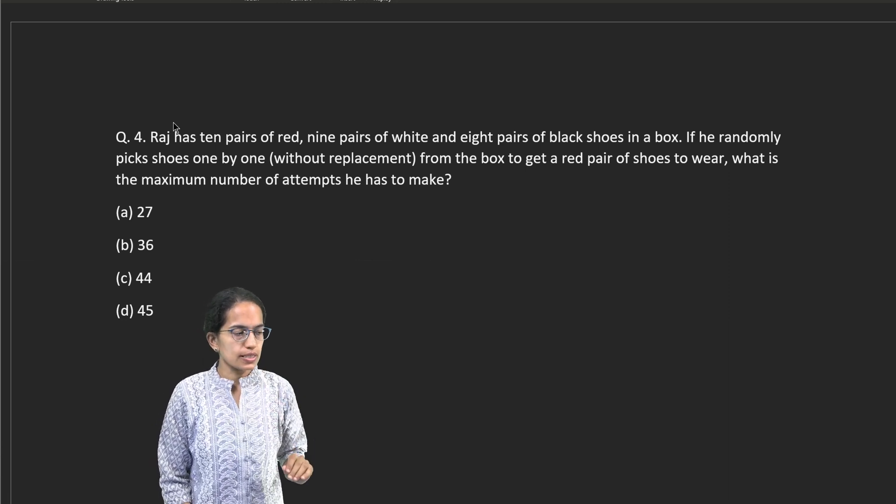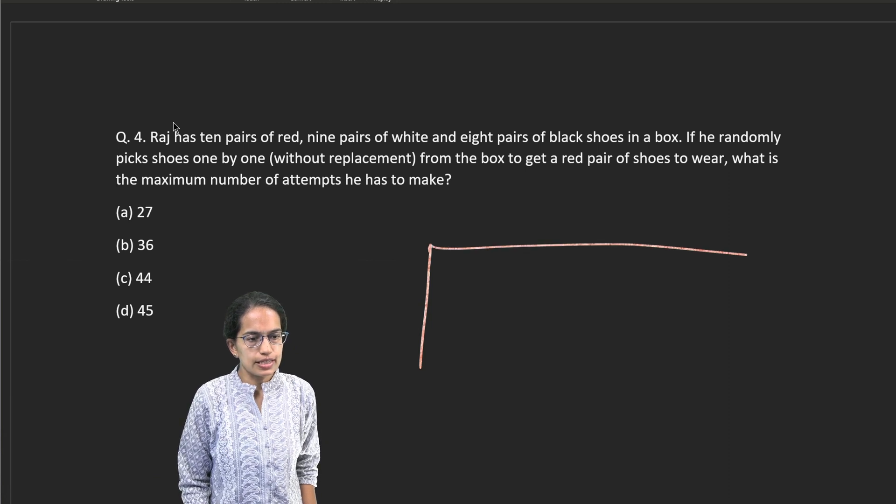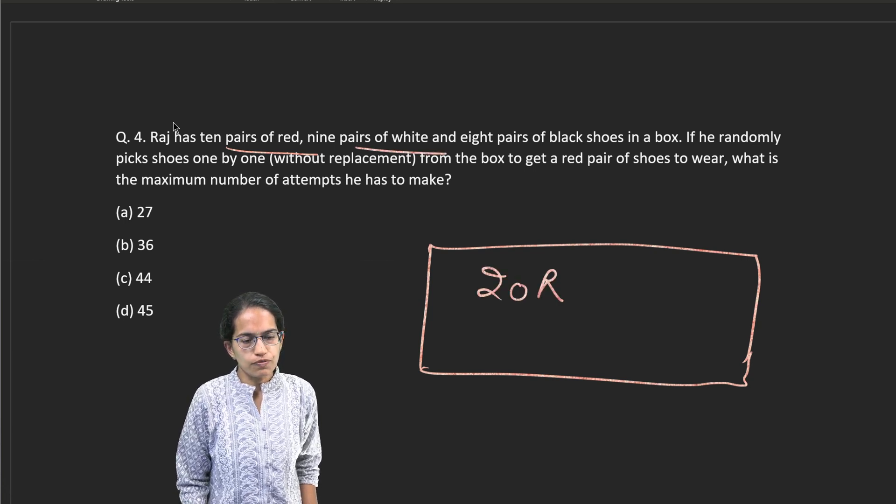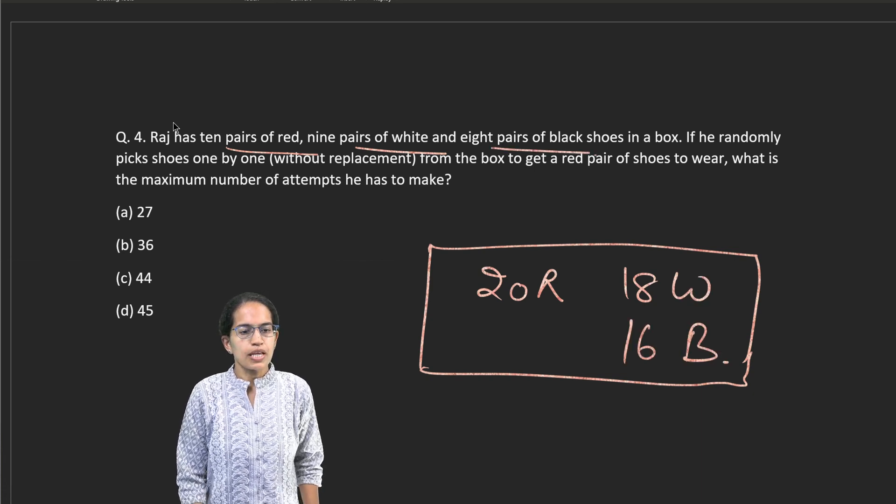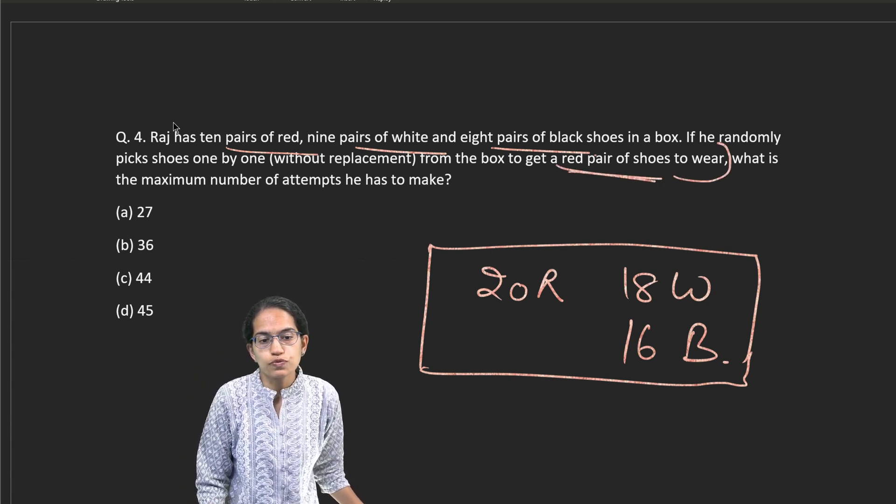The first question we would discuss today is the pair of shoes. In a box, the pair of shoes are given. There are 10 pairs of red shoes, that means 20 red, 9 pairs of white, that means 18 white, and 8 pairs of black, that means 16 black. Now, without replacement, you have to get a red pair of shoes to wear.